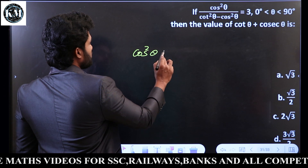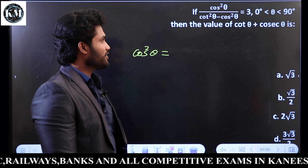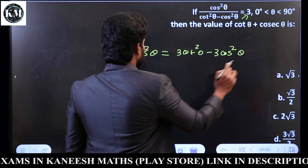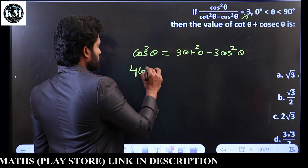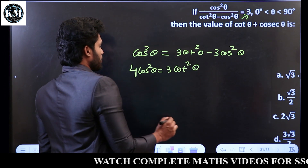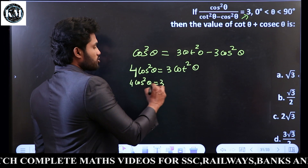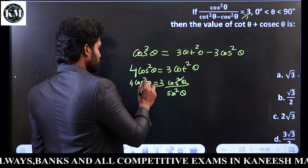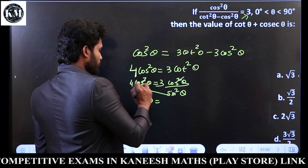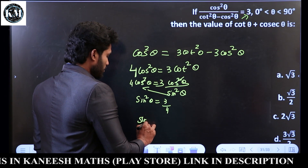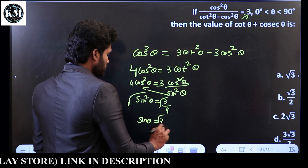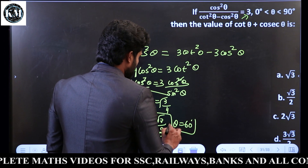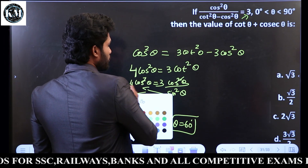Next: cos² θ divided by cos² θ minus cos² θ equals 3. This gives 4 cos² θ. Since cos² θ equals cos by sin, after cancelling, sin² θ = 3 by 4. So sin θ = root 3 by 2. And root 3 by 2 means θ equals 60 degrees.